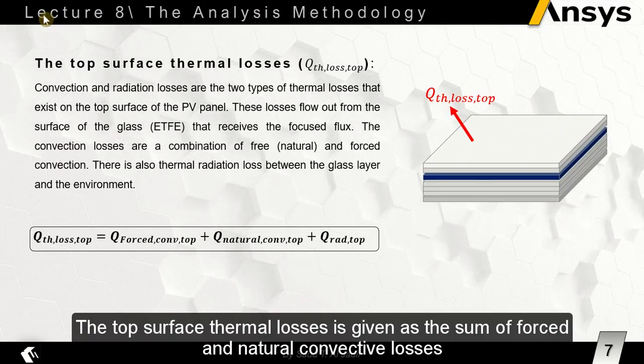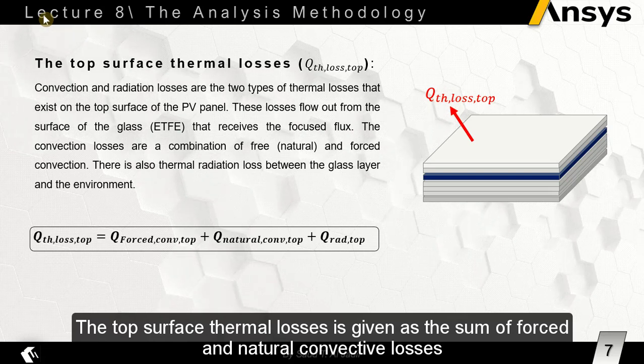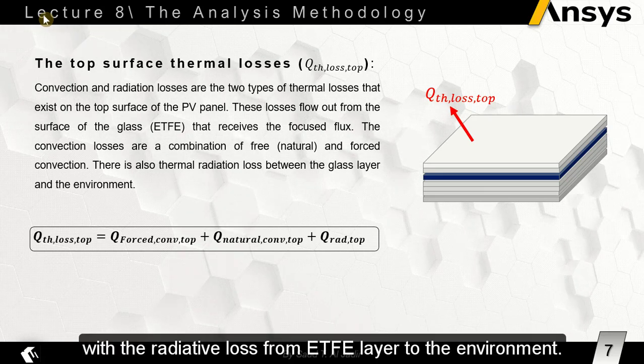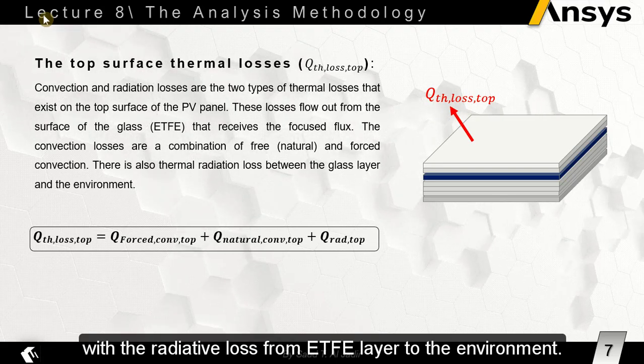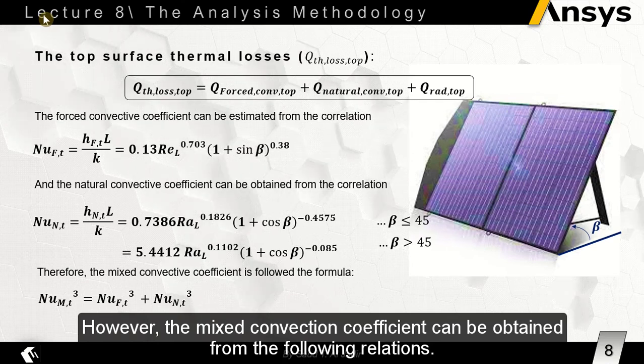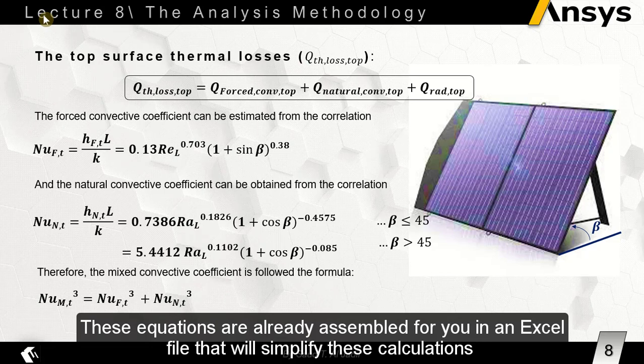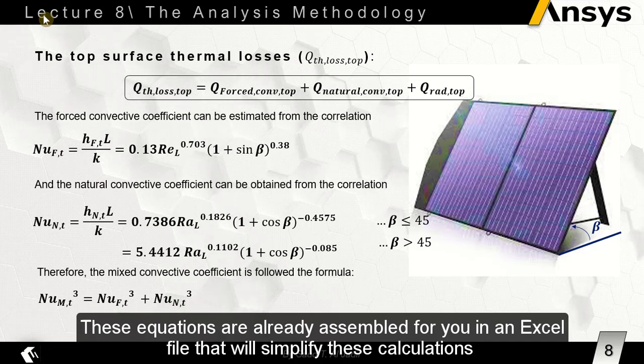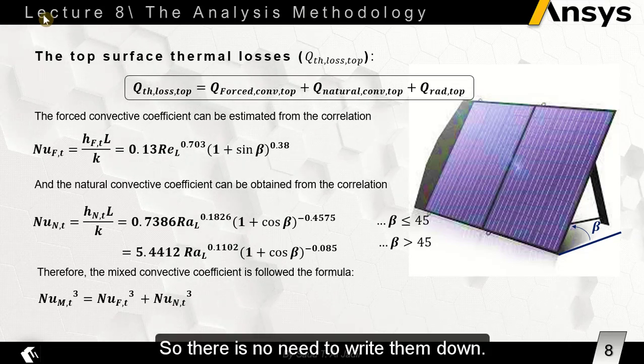The top surface thermal losses is given as the sum of forced and natural convective losses with the radiative loss from ETFE layer to the environment. However, the mixed convection coefficient can be obtained from the following relations. These equations are already assembled for you in an Excel file that will simplify these calculations so there is no need to write them down.